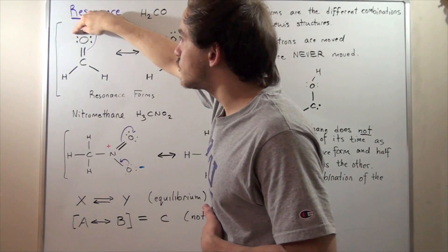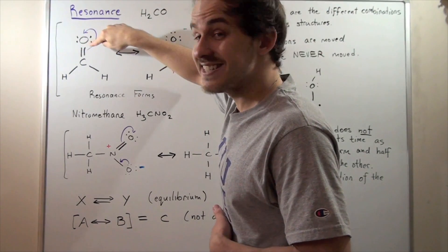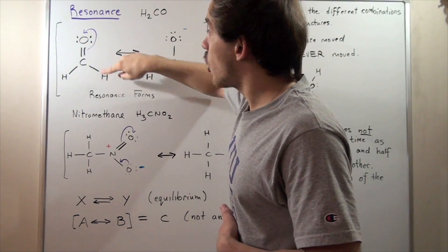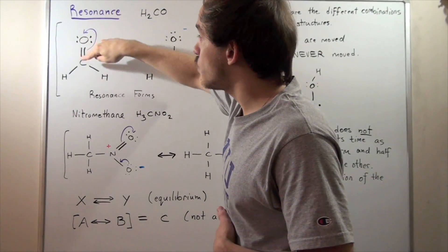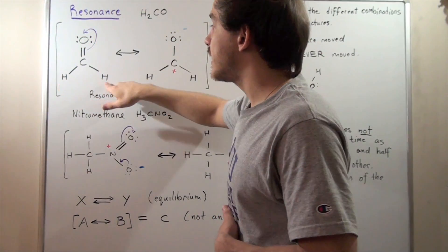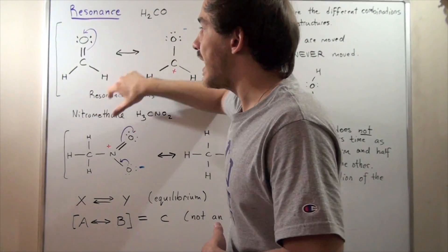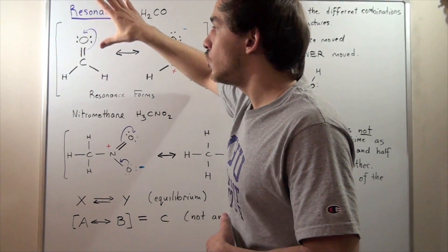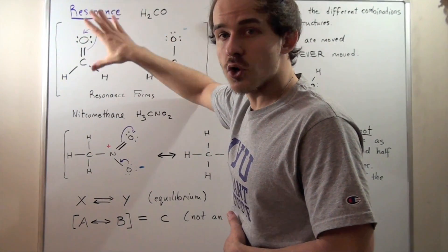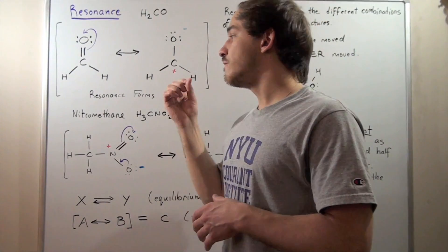Because oxygen has six electrons, carbon has four, and H has one each, this is a neutral Lewis structure.